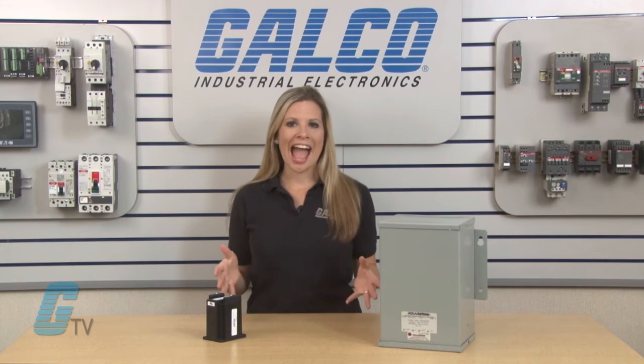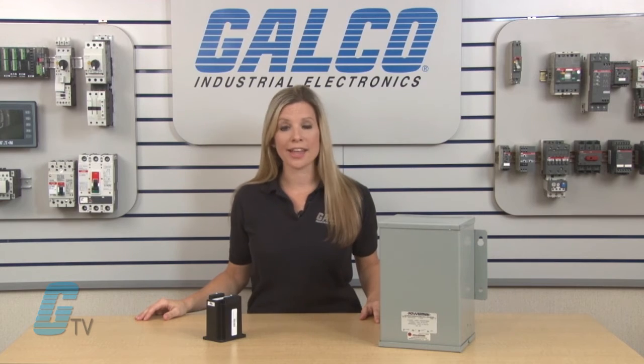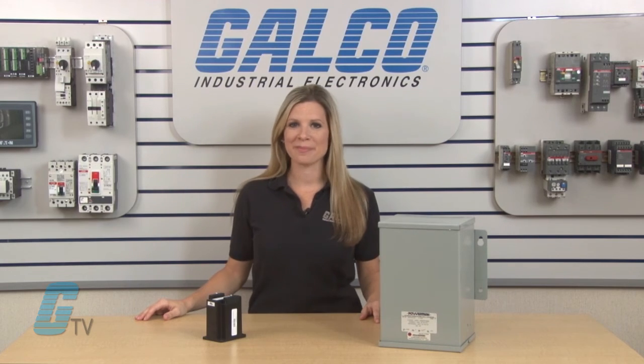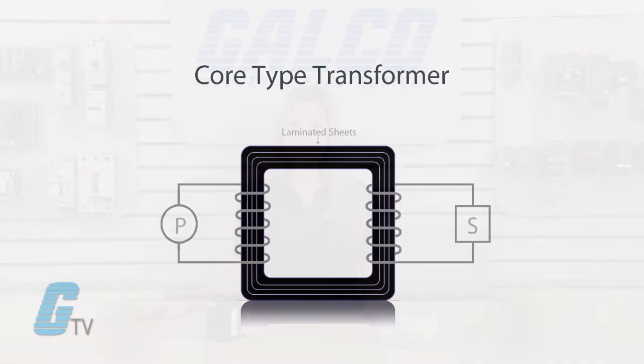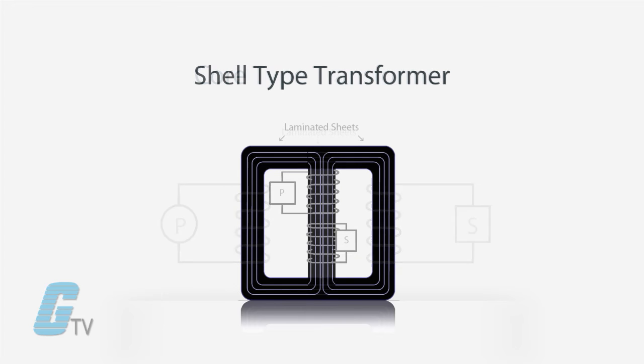Transformers generally have one of two types of cores: core type and shell type. In the core type, the windings surround the laminated core, whereas in the shell type the windings are surrounded by the core.